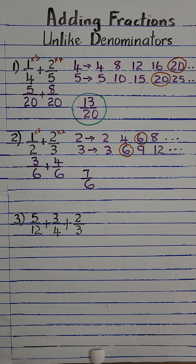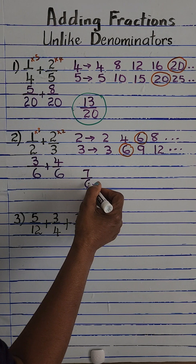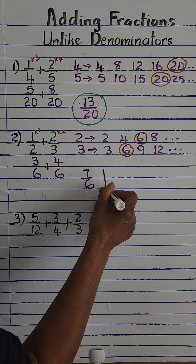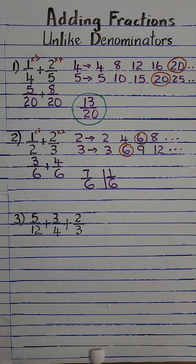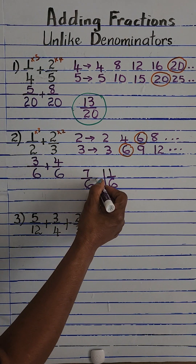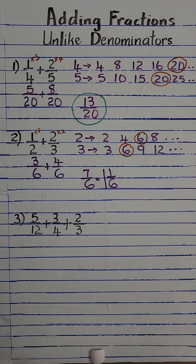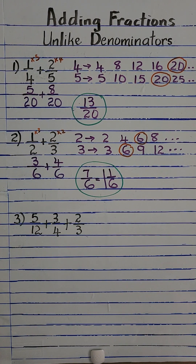Seven over 6 is an improper fraction, so we have to convert that to a mixed number. To convert an improper fraction to a mixed number, we divide the numerator by the denominator: 7 divided by 6 gives us 1 with a remainder of 1, and we keep the same denominator. So our final answer is 1 and 1/6.